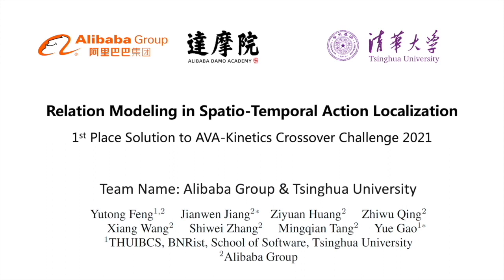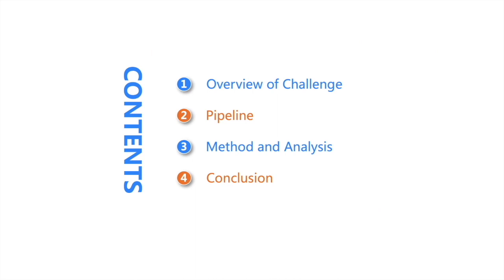Hello everyone. I'm Yutong Feng from Tsinghua University at Alibaba Group. Today I'm glad to share our first place solution to the AVA Kinetics Crossover Challenge 2021, named Relation Modeling in Spatial Temporal Action Localization. I will present our solution in four parts: an overview of the challenge, our designed pipeline, details of methods and experimental analysis, and the conclusion. The task is to recognize and localize atomic actions in both spatial and temporal dimensions. Predicted results are given by labeled bounding boxes at one FPS.